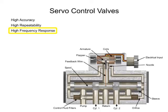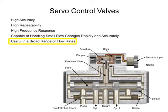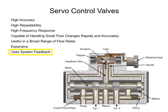Servo valves are highly responsive and capable of handling minuscule flow changes both rapidly and accurately over a broad range of flow rates, but at an extra cost. The main difference between proportional and servo valve circuit design is that servo systems have a method of feedback that assures the actuator is doing what the controller tells it to do.